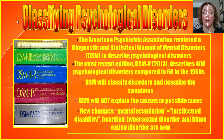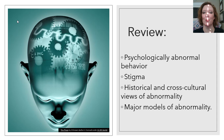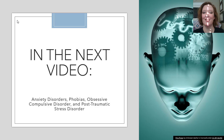There was also a large shake-up in how disorders are linked with other disorders and placed into similar categories — we'll get into more details in future videos. To review what we talked about in this video: psychologically abnormal behaviors, stigma, historical and cross-cultural views of abnormality, and major models of abnormality and classification. In our next video, we'll be talking about anxiety disorders, phobias, obsessive-compulsive disorder, and post-traumatic stress disorder. I can't wait to see you then. Bye for now!